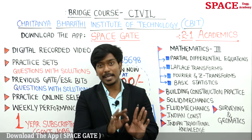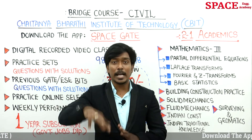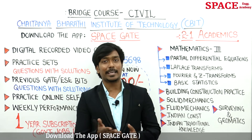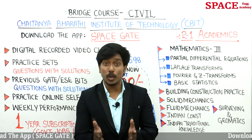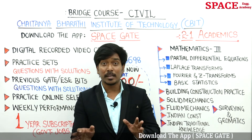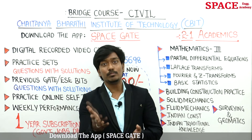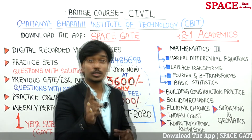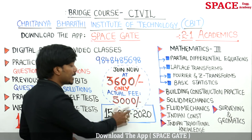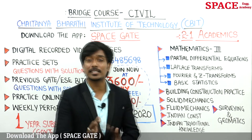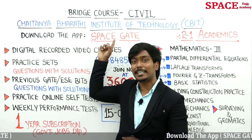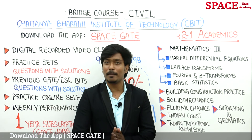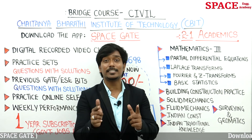This bridge course 2020 is not only for GATE — it includes a 1-year subscription for all diploma-based government jobs, including civil and mechanical. Market fee is ₹50,000 to ₹60,000 a year and people are still not qualifying GATE or getting their dream jobs. Those who join on or before 15th October 2020 will get it at ₹3,600 instead of ₹5,000. Download the Space Gate app and hurry up. This is Mohamed Inzamam signing off — take the decision now and change your career.